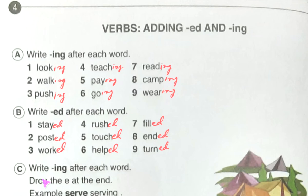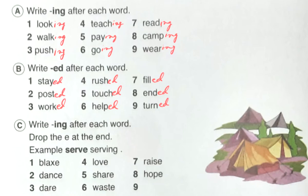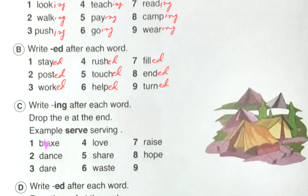Exercise C: write ing after each word, but drop the e at the end. We are finding some words — we will drop the e and add ing. The example given is serve→serving, where the e is dropped. So let's start: blaze→blazing.